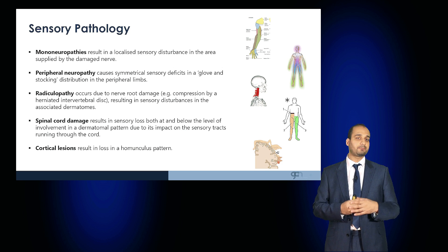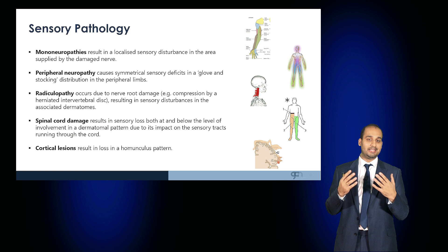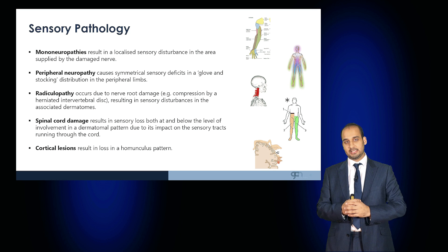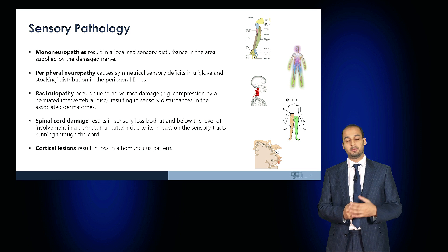Sensory pathology can present in a number of ways. Mononeuropathies result in localized sensory disturbance in the area supplied by the damaged nerve. Peripheral neuropathy tends to cause symmetrical sensory deficits in a glove and stocking distribution, whereas radiculopathy — due to nerve root damage such as from a herniated intervertebral disc — results in a dermatomal pattern. Spinal cord damage leads to a sensory level where sensation is impaired at and below that dermatome, and cortical lesions result in loss of sensation in a homunculus pattern.